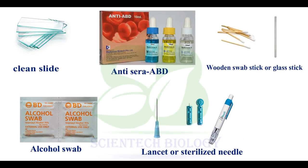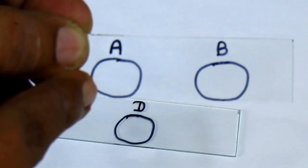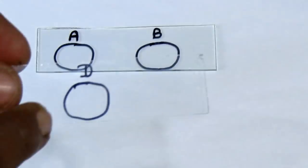To check blood group at our home we require a clean slide, anti-serum A, B, and D, some wooden swab sticks or glass rods, and an alcohol swab. Take two separate slides labeled as A, B, and D.